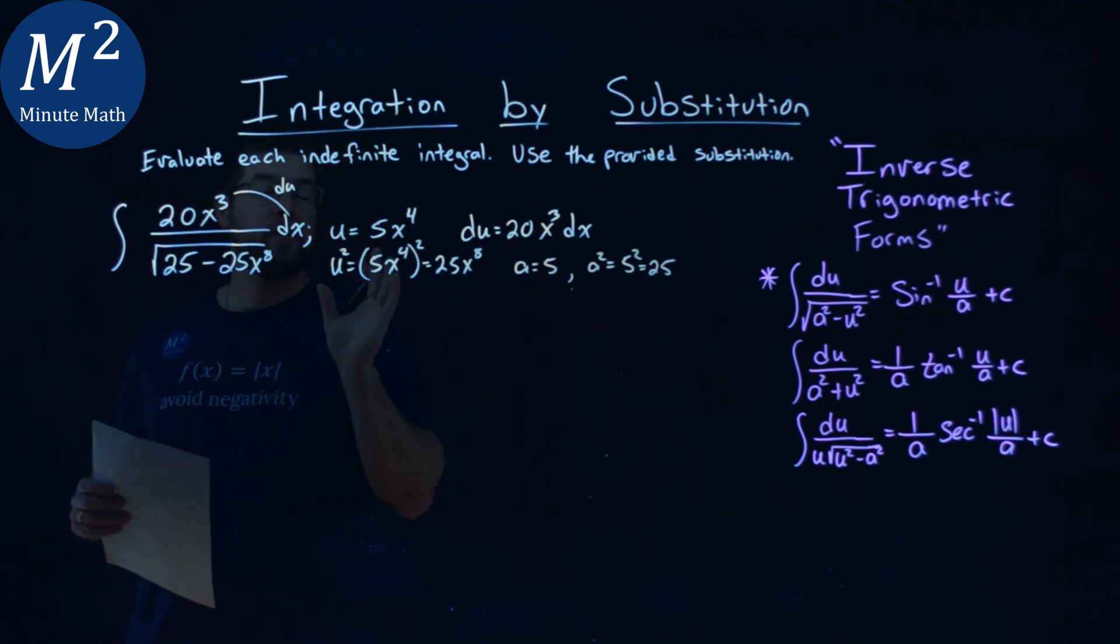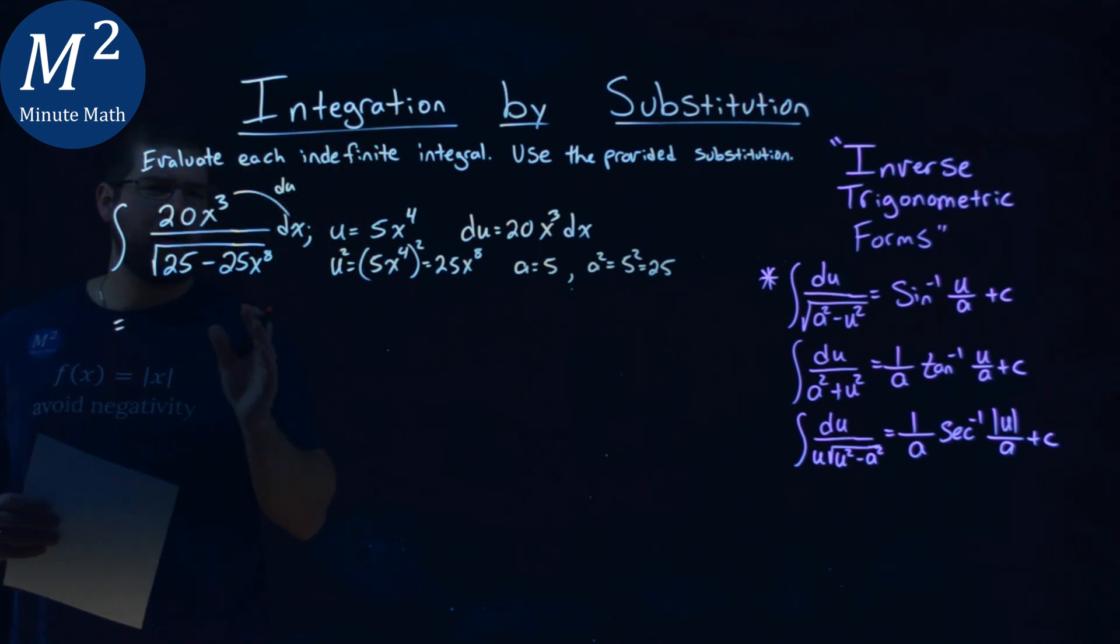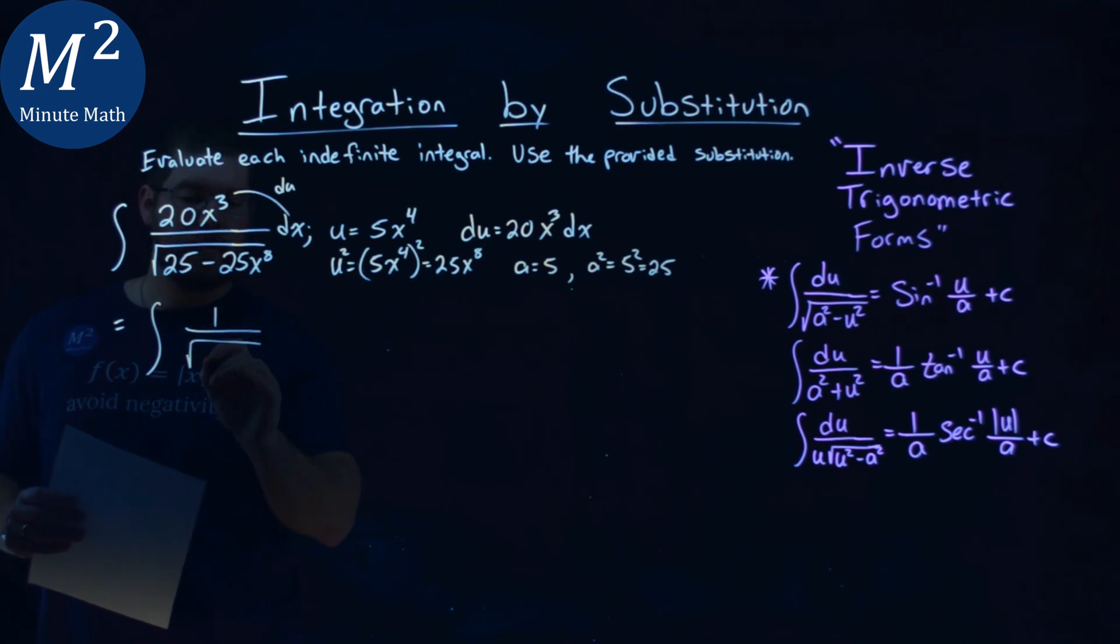So, let's go write this in terms of u, and we'll see it in a second. So, this is how I like to do it. Integral of 1 over, so that's 1 over my square root. My a value is 5, so I like to write it as 5 squared, as such, minus...